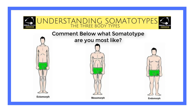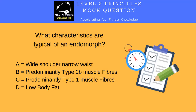Now you know about all three somatotypes, let's test your knowledge. This is a mock question typical of what you might find in your level 2 principles exam. Pop your answers in the comments box below and I'll go through the answer in a moment. The question: what characteristics are typical of an endomorph? Is it A — wide shoulders, narrow waist? B — predominantly type 2b muscle fibers? C — predominantly type 1 muscle fibers? Or D — low body fat? Read through the question, take your time, and pop your answer in the comments.